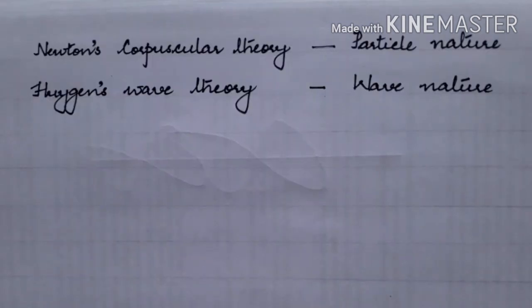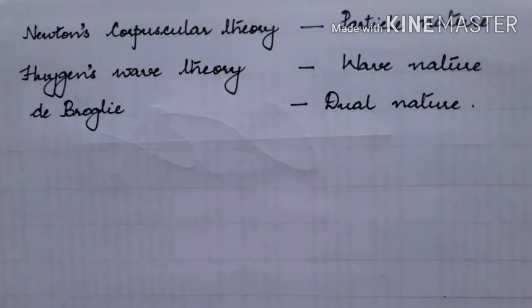Earlier, light was believed to have only particle nature and that was proposed by the scientist named Newton in his corpuscular theory. He stated that light travels in the form of particles, each particle was called as corpuscles. Whereas later on, the scientist named Christian Huygens explained light to travel in the form of waves and that explains the wave nature. Later on, scientist named de Broglie proposed the dual nature for light. That is, it possesses both the behavior of particles and waves.